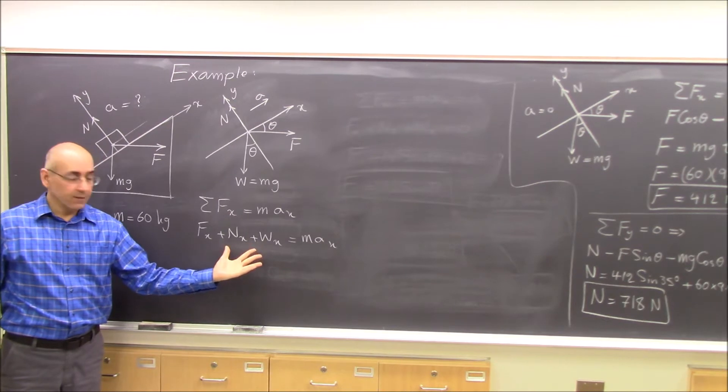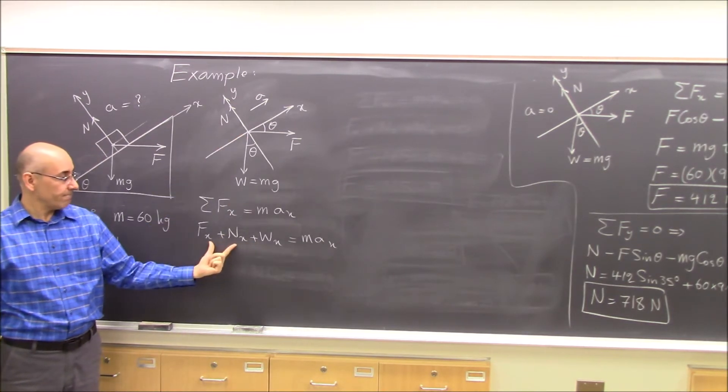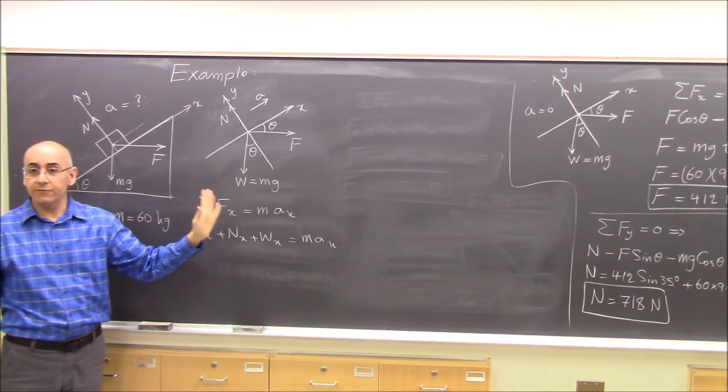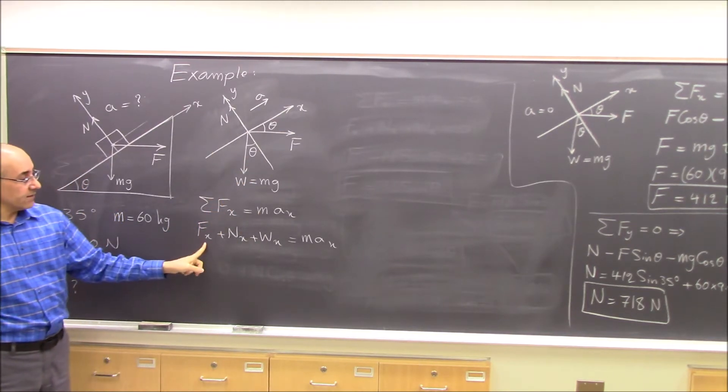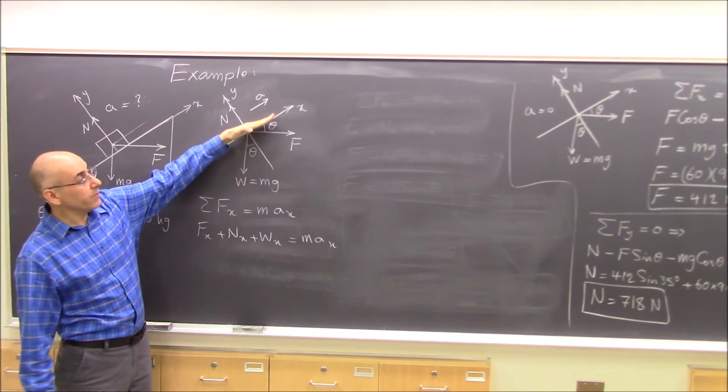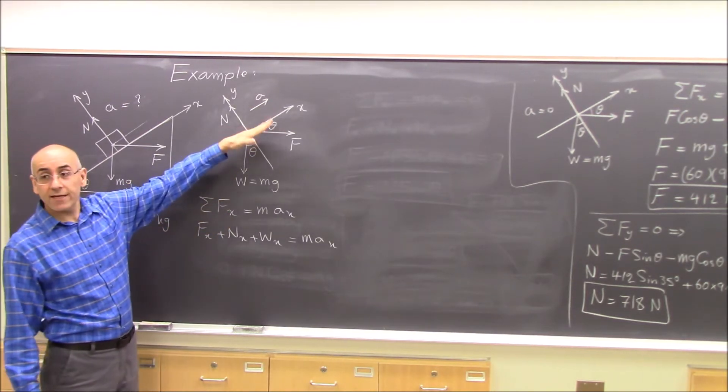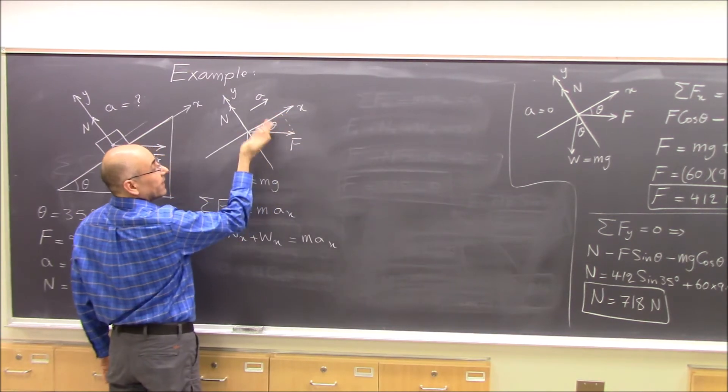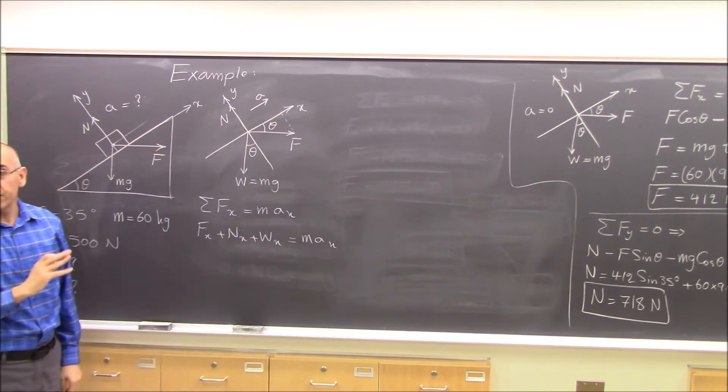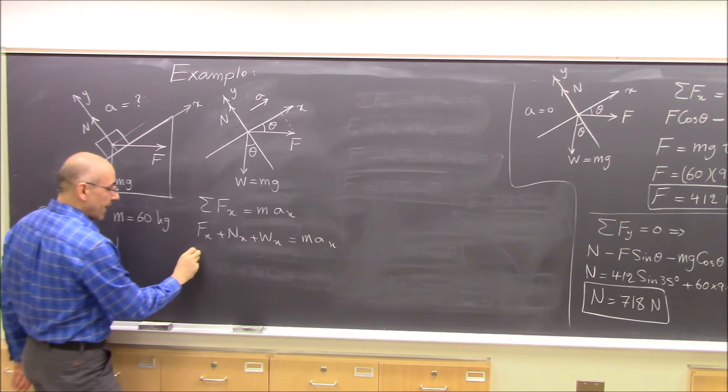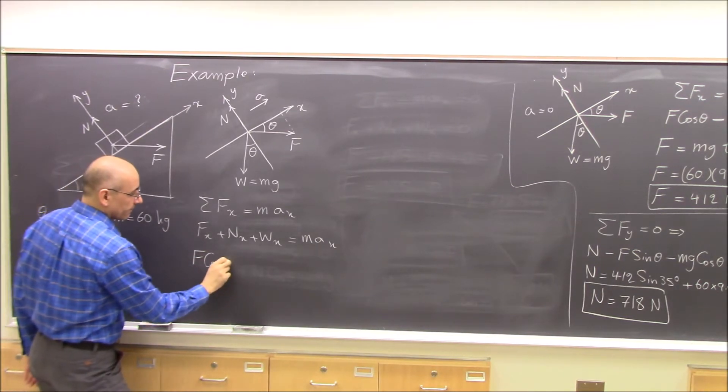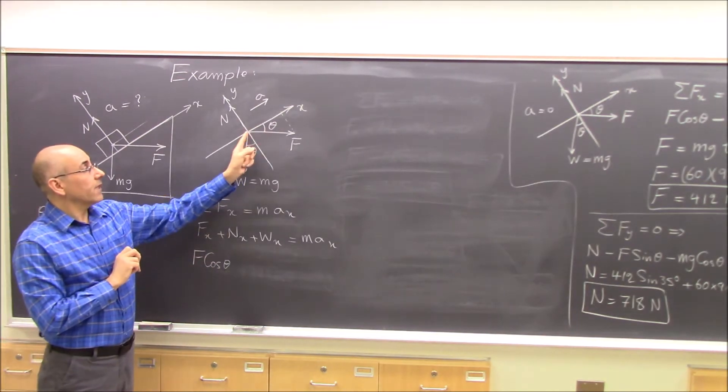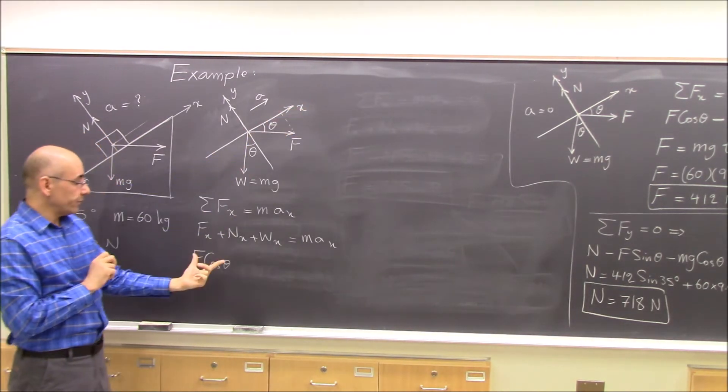Now we apply it to this situation. It means that we write each one in terms of the magnitudes and directions. So Fx is what? The x component of F. How do I find Fx? You see, I look at this right triangle here. Fx is adjacent to theta, so I use magnitude F times cosine theta. And because it is in the positive direction, it becomes positive.